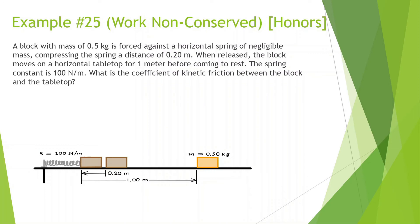A block with a mass of 0.5 kg is forced against a horizontal spring, compressing it a distance of 0.2 meters. When released, the block moves on a horizontal table for 1 meter before coming to rest. The spring constant is 100 newtons per meter — find the coefficient of kinetic friction between the block and the tabletop.